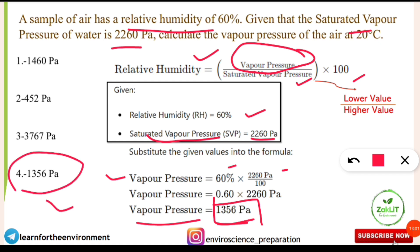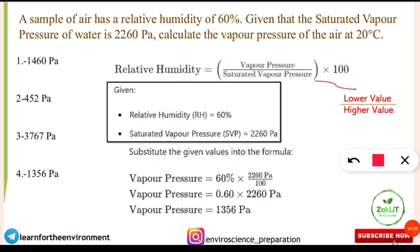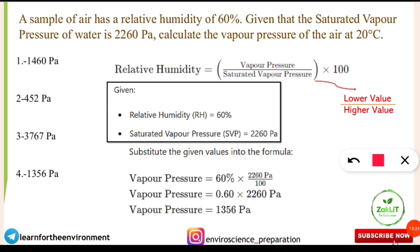One tip to avoid confusion: relative humidity is always the lower value divided by the higher value, multiplied by 100. So vapor pressure divided by saturated vapor pressure gives you the RH. Sometimes relative humidity will be asked directly, but here we had to find the vapor pressure.